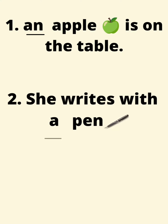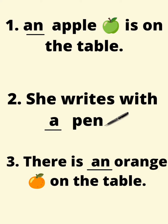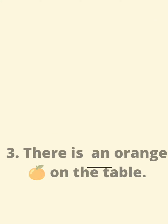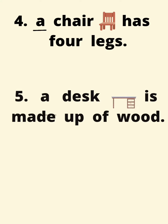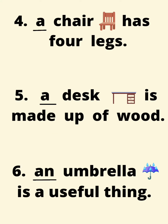An apple is on the table. She writes with a pen. There is an orange on the table. A chair has four legs. A desk is made up of wood.